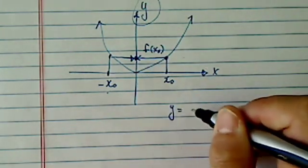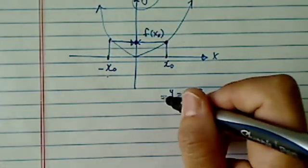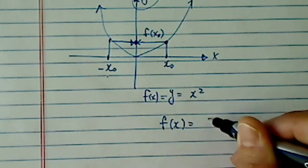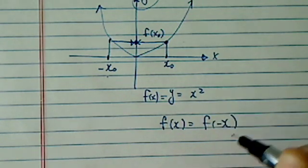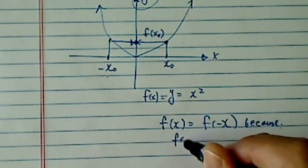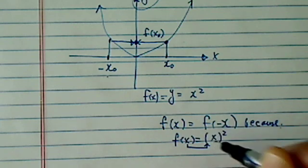For example, if y is equal to x squared, which is the easiest one we can think of, and let's put this one as a function of x, then f of x equal to f of negative x, because let's take a look. f of x, whatever I give, I'm going to square it, which is x.